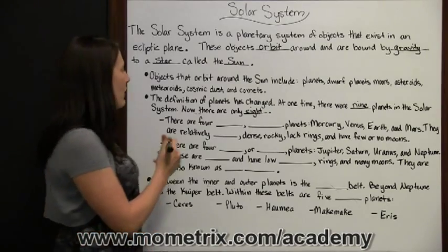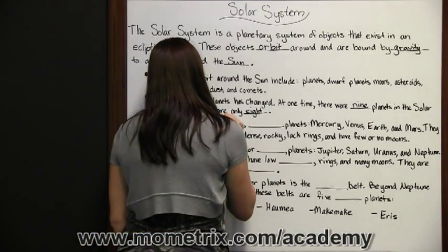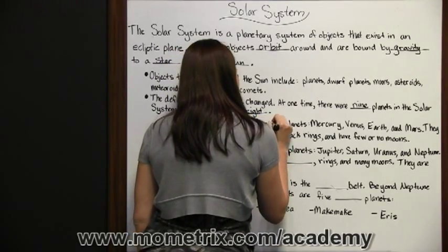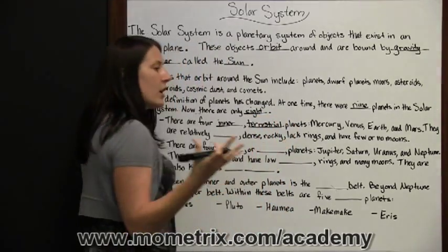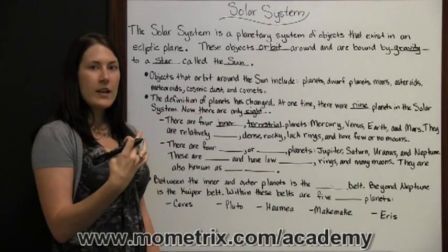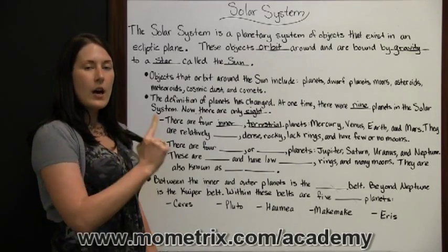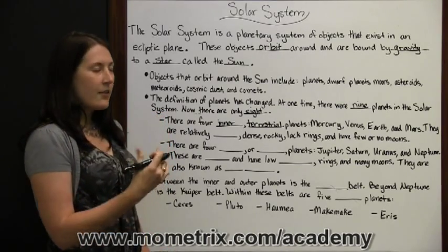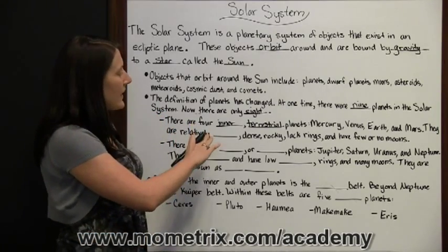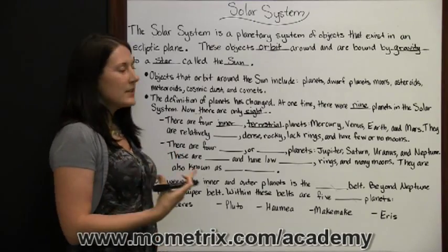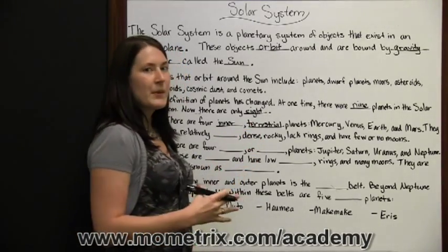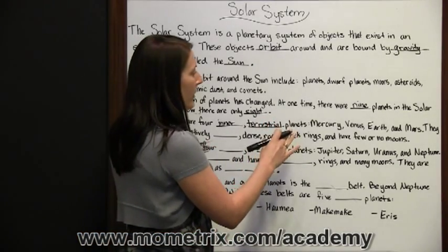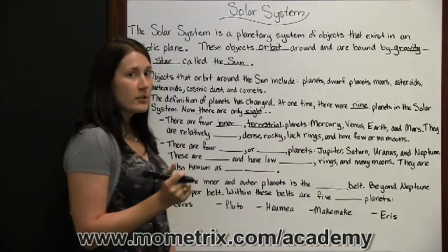Of our planets, there are four inner terrestrial planets that are closer to the Sun — they orbit closer than the other planets. They are Mercury, Venus, Earth, and Mars. Being terrestrial means they have more land and mass to them.